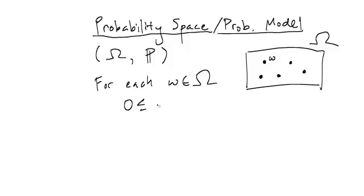we ask that the probability of the outcome, little omega, is at least zero and at most one.